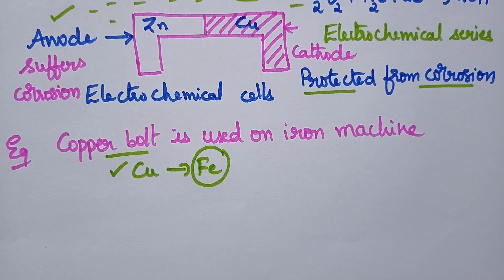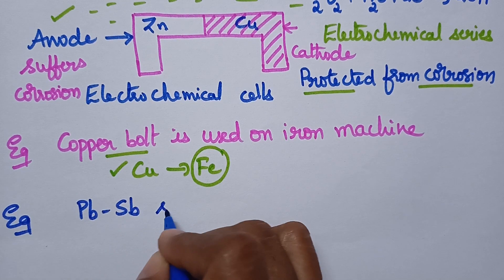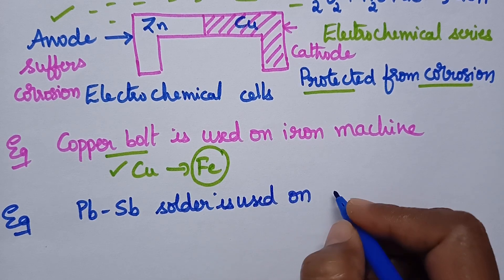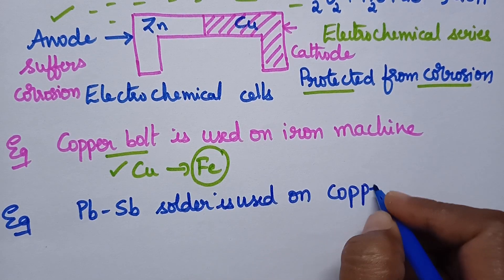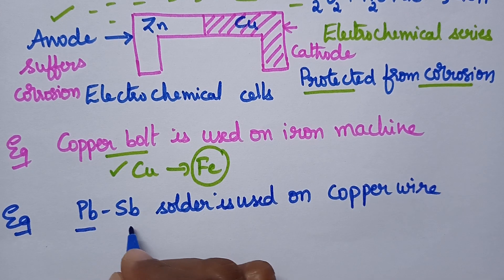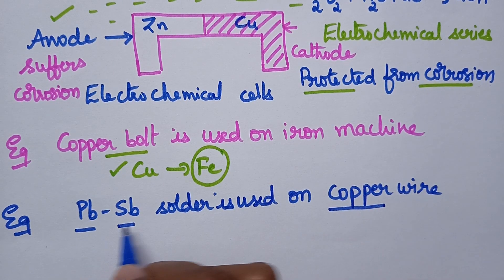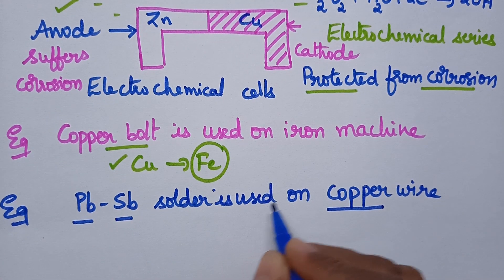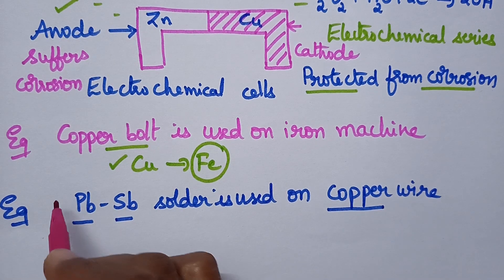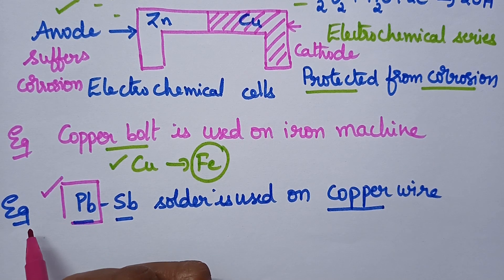In a similar way, whenever lead and antimony solder is used on a copper wire, three metals are present: lead, antimony, and copper. These three metals are connected to each other and jointly exposed to a moist environment. Lead, being higher in the electrochemical series, acts as the anode and undergoes corrosion.